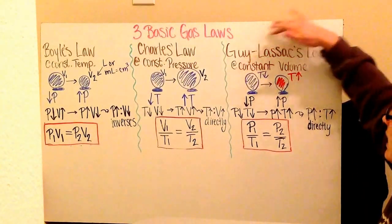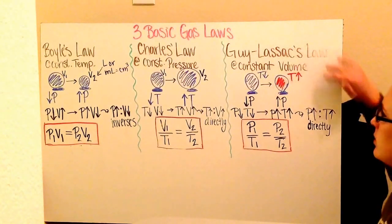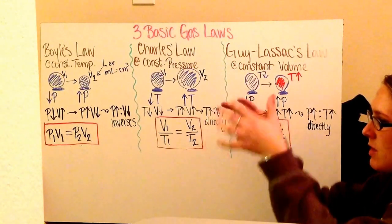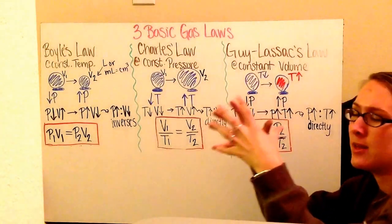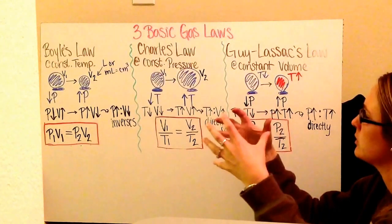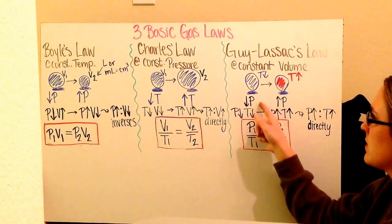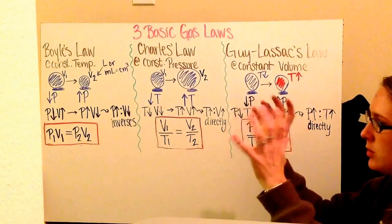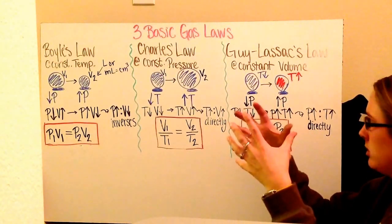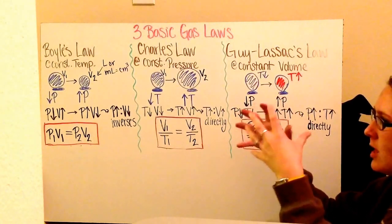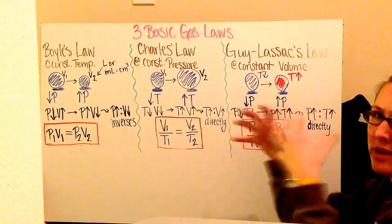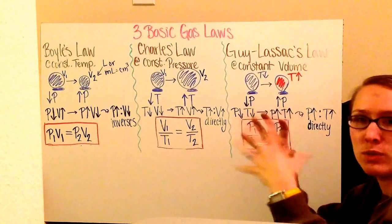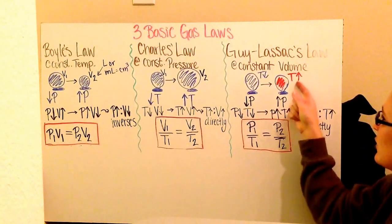The third law is Gay-Lussac's Law, and it's at constant volume. The balloon stays the same volume — this would be like if it were a very rigid, hard plastic balloon. I'm starting at a low pressure and I'm going to increase the pressure on the air inside my balloon. Because it's a hard rigid balloon, as pressure increases, those molecules become really agitated and move around, but they can't expand the volume. So they create a lot of friction, which increases my temperature.